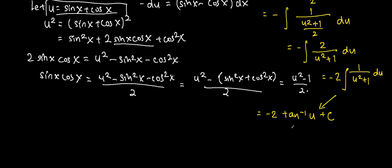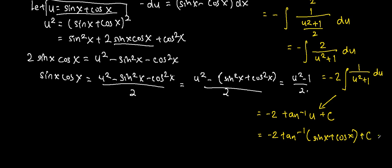Last but not least, we substitute sin x plus cos x back in for u, so we get negative 2 times tangent inverse of sin x plus cos x plus C, and that is the final answer. Thank you guys for watching.